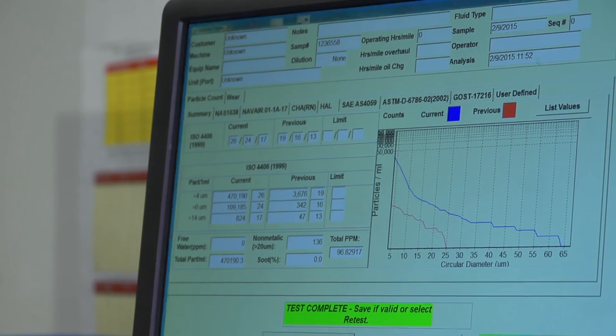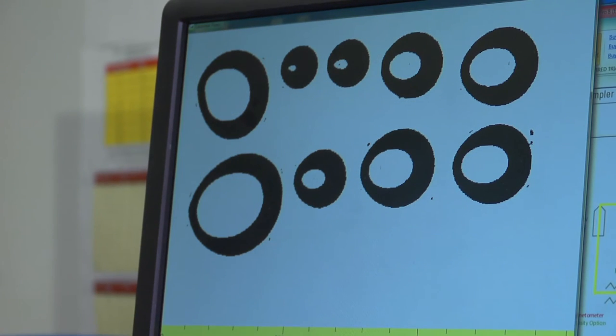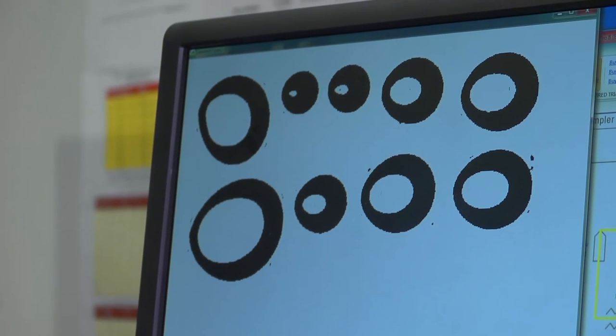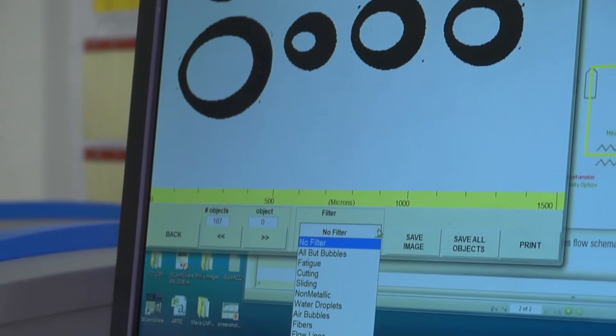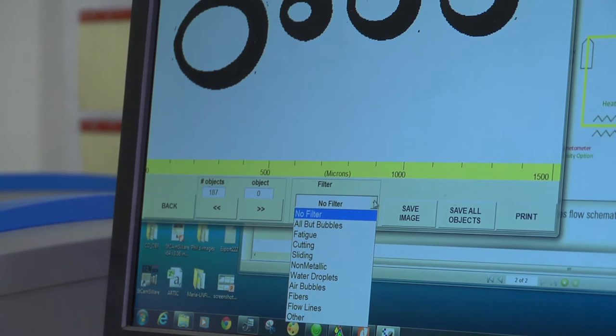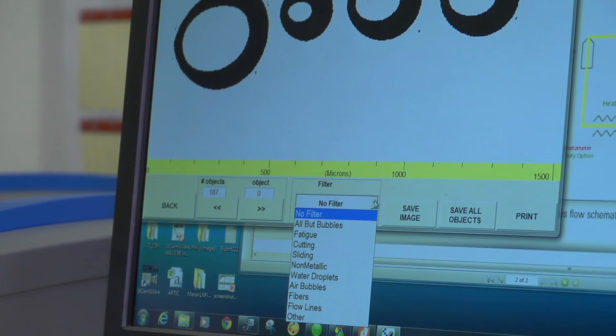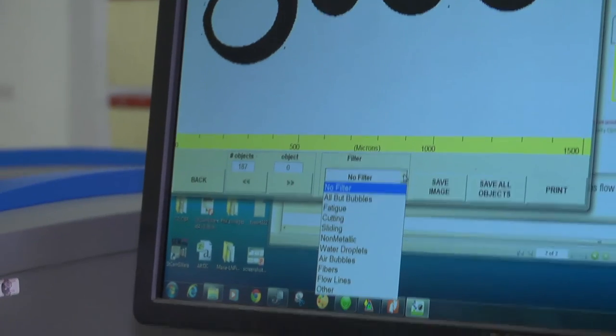And I'll go over a few of the wear images. Basically, what happens is that the LNF images all, and you can see the shape classification according to whether it's a fatigue particle, a cutting particle, a sliding wear particle, non-metallic which is typically an oxide such as dust or dirt, silicon dioxide,